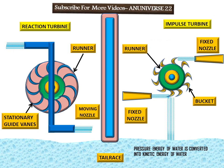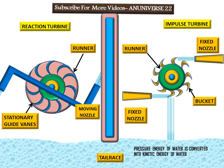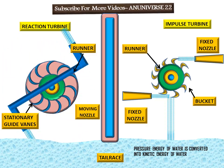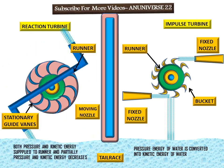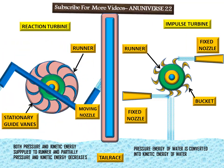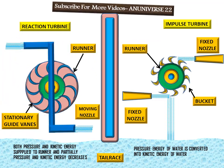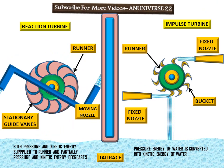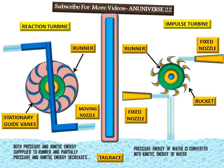In the case of the reaction turbine, there is a moving nozzle. Here, only part of the total available head is converted into kinetic energy, and the rest remains in the form of pressure energy. The pressure of water entering the turbine is always above atmospheric pressure, and as water flows through the turbine, its pressure changes. The flow of water from the inlet to the tailrace remains under pressure throughout.